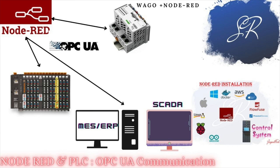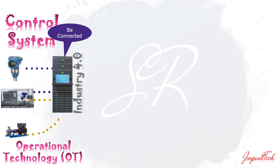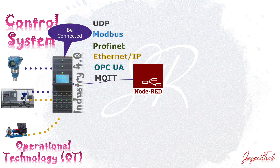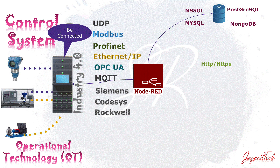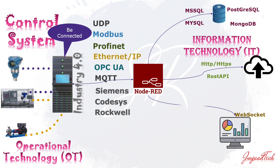Hello friends, welcome back to the Node-RED tutorial series. As of now we have learned how we can install Node-RED and connect to AWS IoT cloud using MQTT. Now let's see how we can enable Node-RED to work as a gateway for industrial protocol. In this tutorial I am going to cover how we can use Node-RED for OPC UA server as well as client. OPC UA is an industrial protocol which is used for exchanging data between devices.